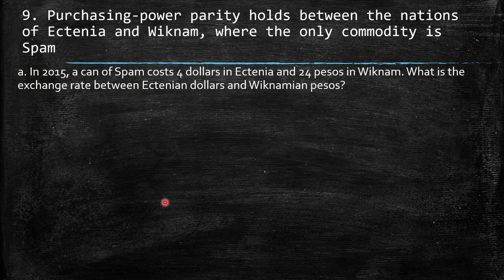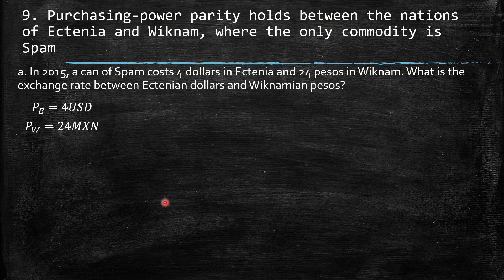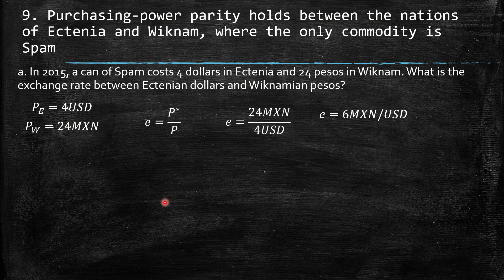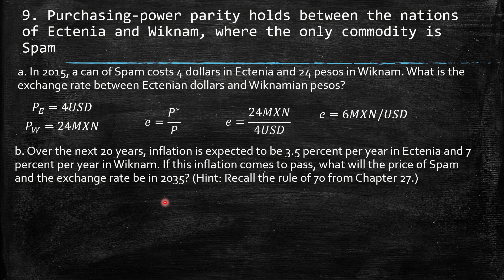Question 9: purchasing power parity holds between the nations of Ictania and Wignam where the only commodity is spam. In 2015, a can of spam costs 4 dollars in Ictania and 24 pesos in Wignam. What is the exchange rate between Ictanian dollars and Wignam pesos? We have 24 Wignam pesos over 4 dollars, giving us 6 Wignam pesos per US dollar.